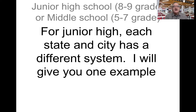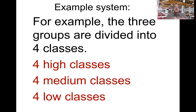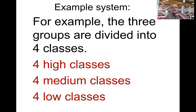For junior high and middle school, each state and city has a different system — I'll give just one example. In many junior highs, students are tested for academic level: high, medium, or low. They're placed in three groups and divided into four classes each. So you might have four high classes, four medium classes, four low classes — about 18 students each, making 12 classes total.